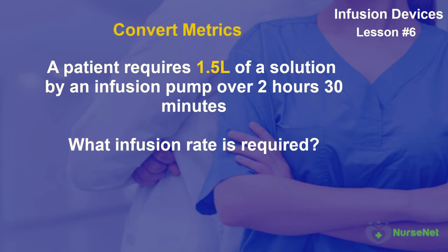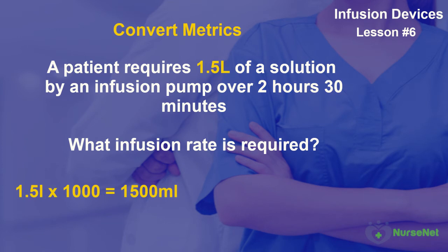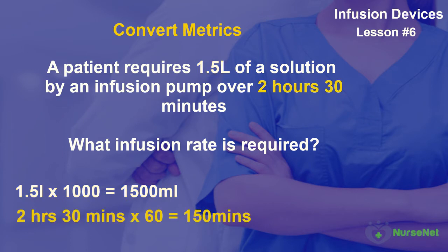In this instance, we need to convert both the volume and the time into the correct metric units. Let's convert litres into millilitres by using a factor of 1,000. So 1.5 litres multiplied by 1,000 gives us 1,500 millilitres. Now we need to convert the hours into minutes. So 2 hours 30 minutes multiplied by 60 gives us 150 minutes.